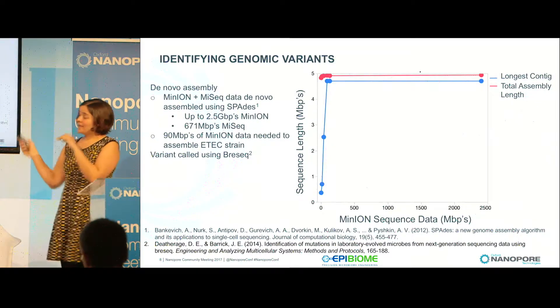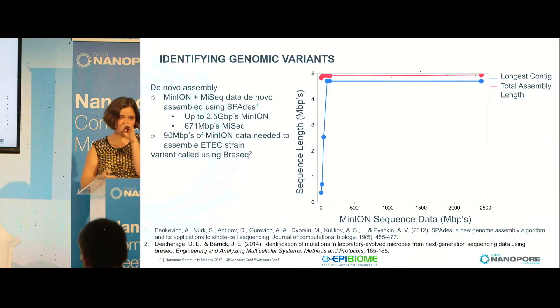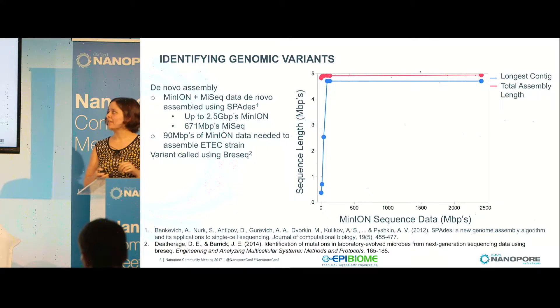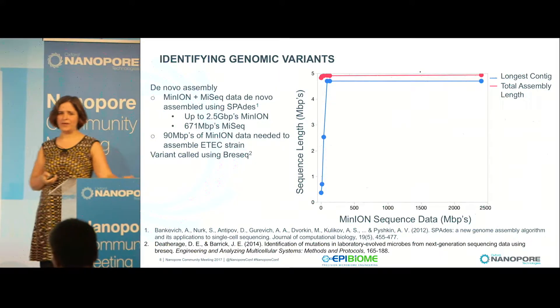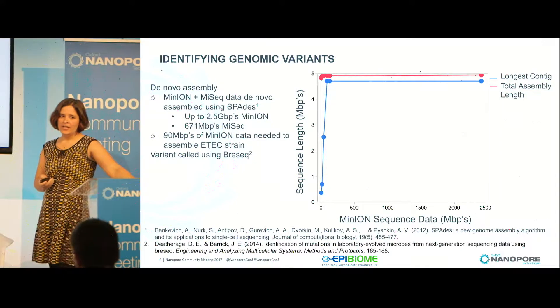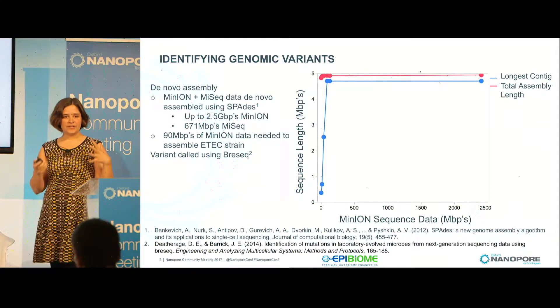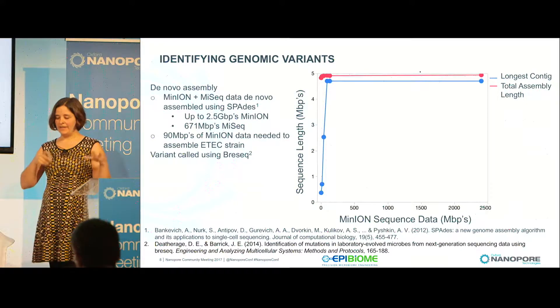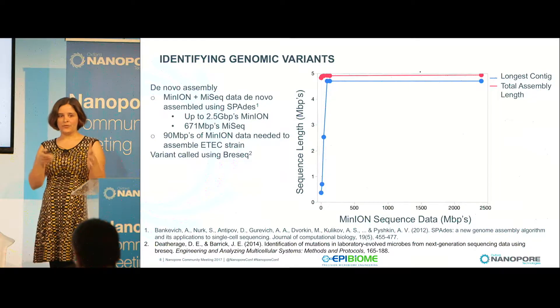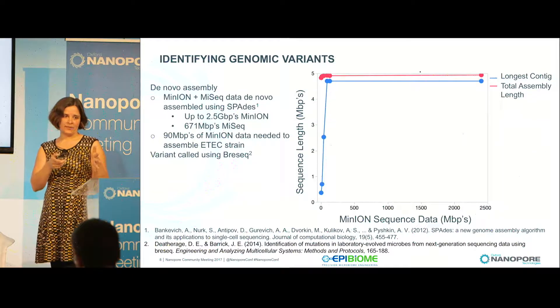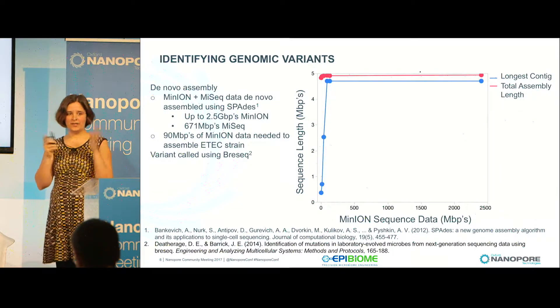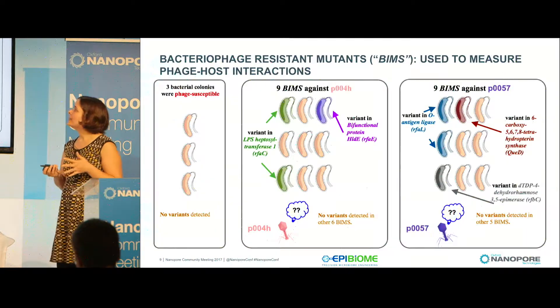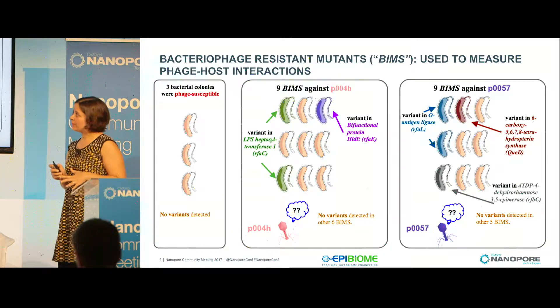Once I got the de novo assembly, the next step was to call variants. I used a pipeline called Breseq to look at the differences between variants in the control phage-susceptible bacteria and the resistant mutants.